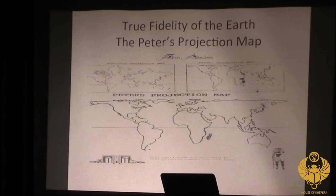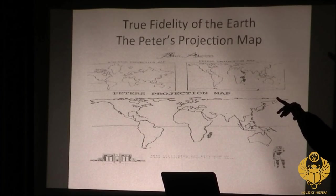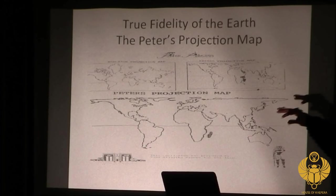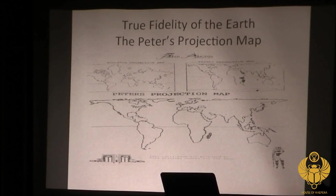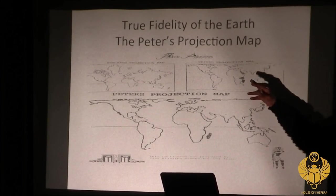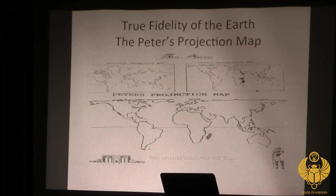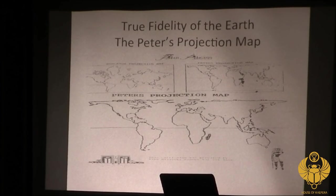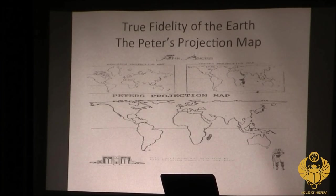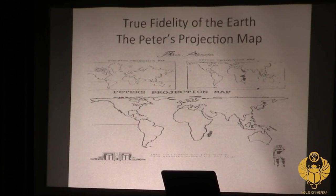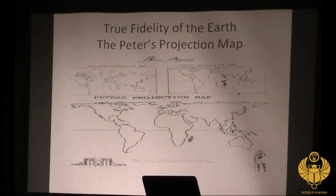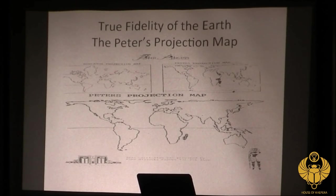However, there was a man by the name of Arnold Peters, who was commissioned as a cartographer — someone who studies and draws maps. What he developed was another map, done using research from spaceships from outer space that took pictures of what the Earth actually looks like. It's called fidelity — it means accuracy. The Mercator map is not accurate.